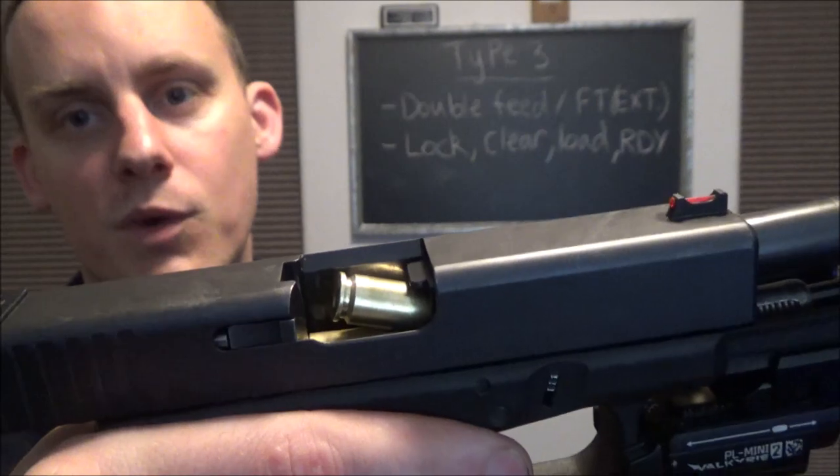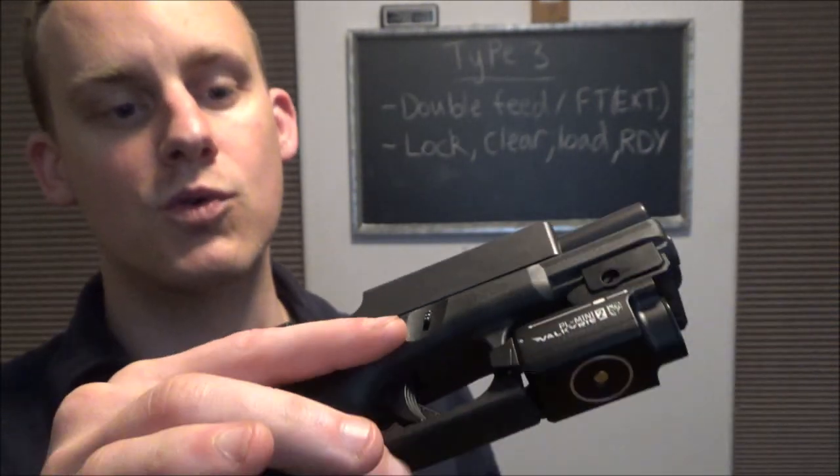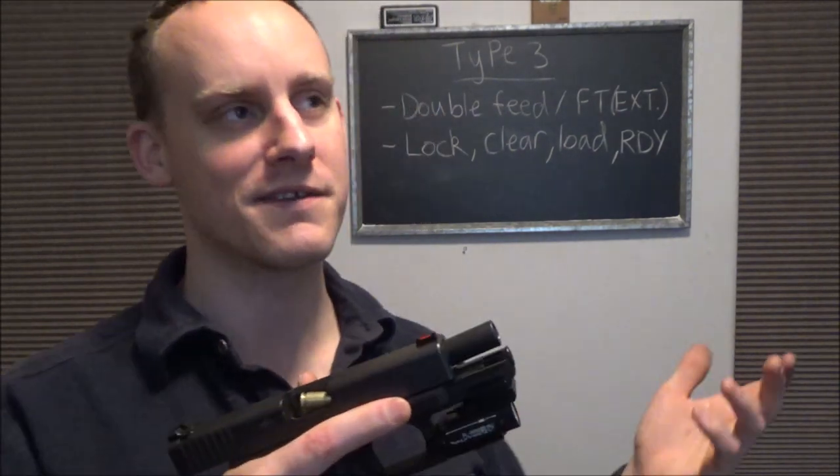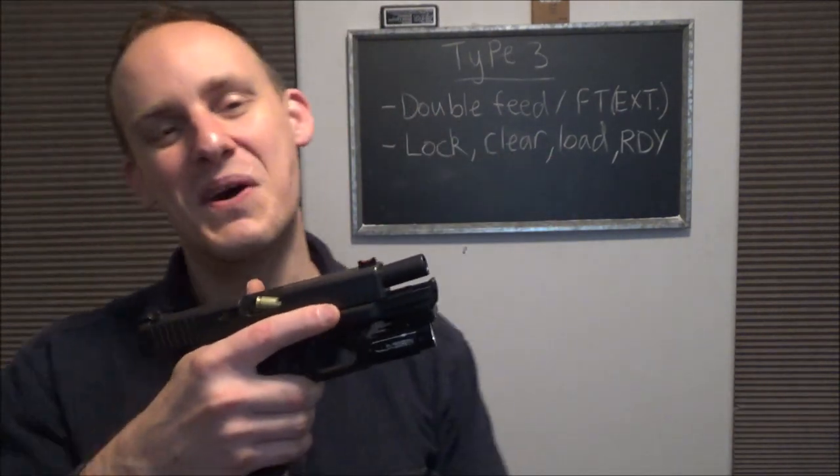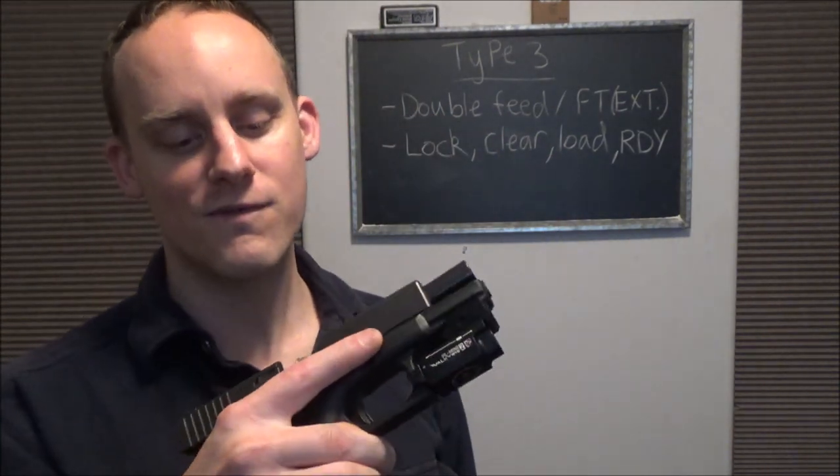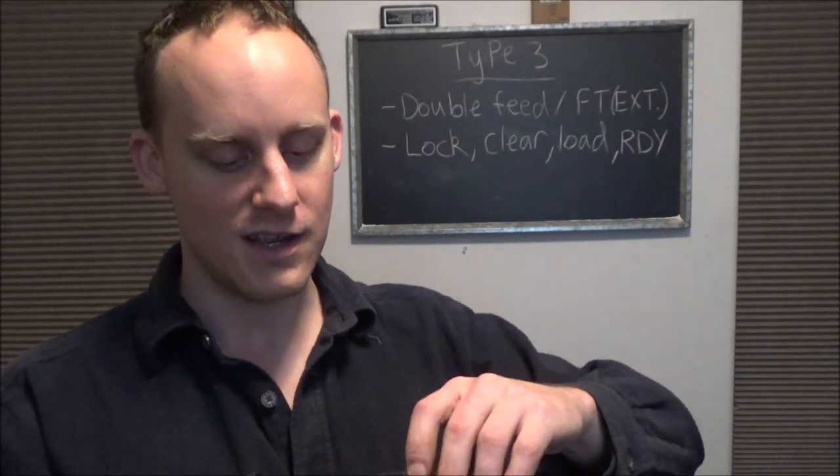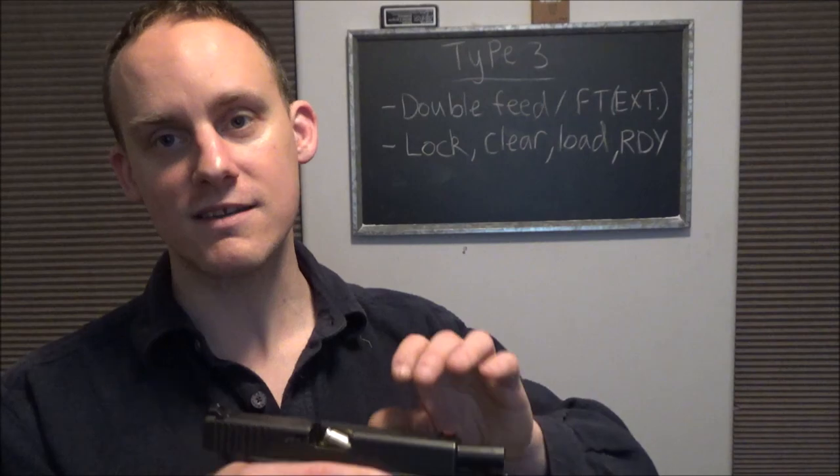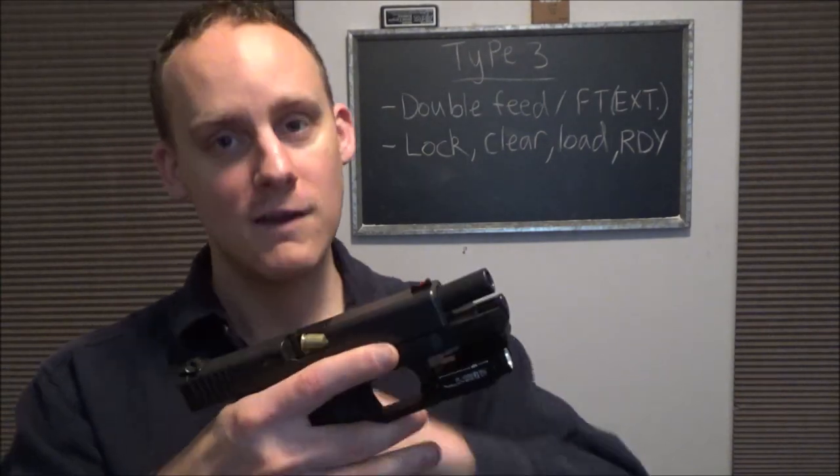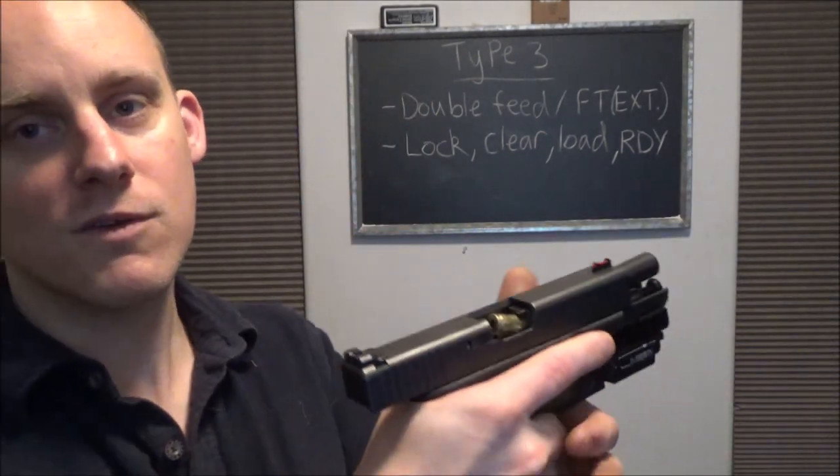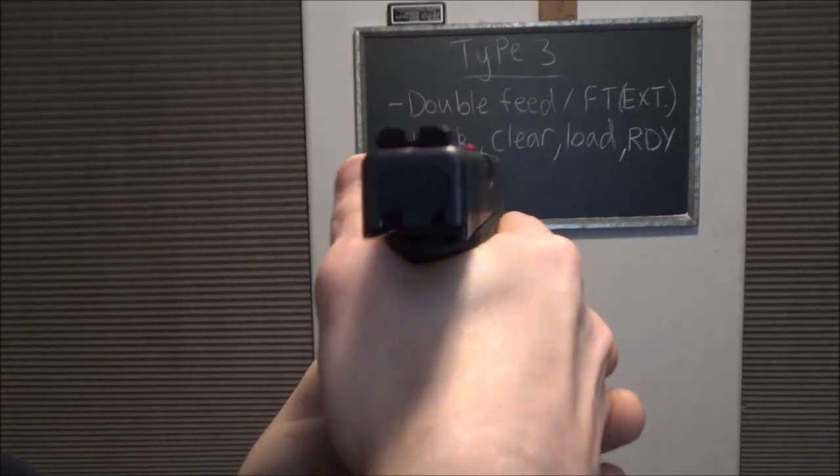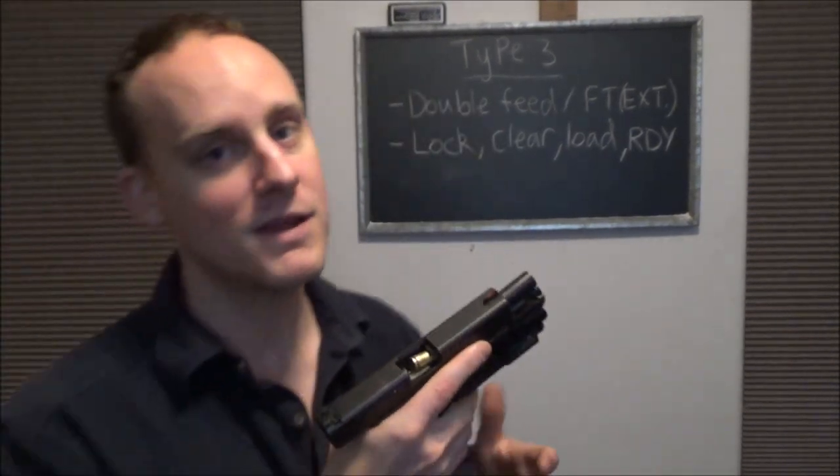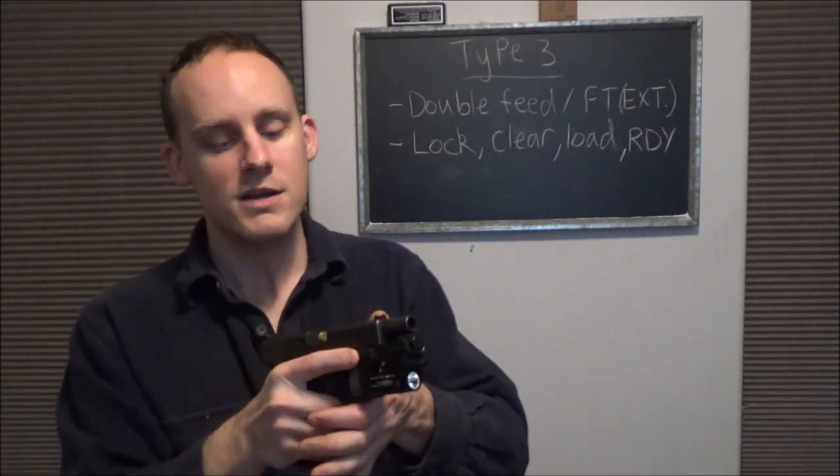And then there you go. So that's typically what a failure to feed in the form of a double feed is going to look like. Not really a failure to feed, but a double feed. That's an absolute failure. That's actually a very, it hurts your feelings when this happens. So anyways, that's a lot of brass. The identification for this is just going to be, boop, you're going to see a lot of brass in there, right? No big deal.